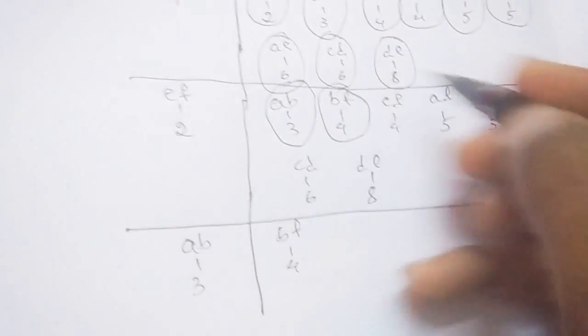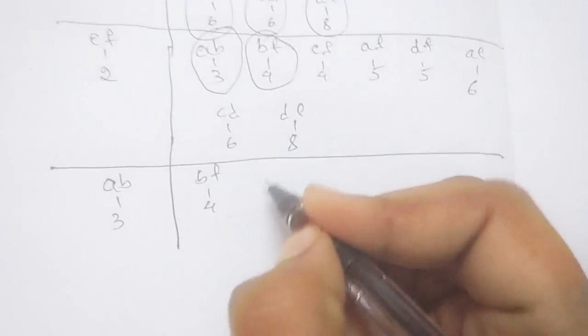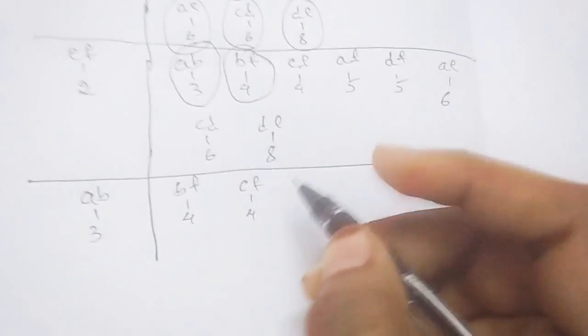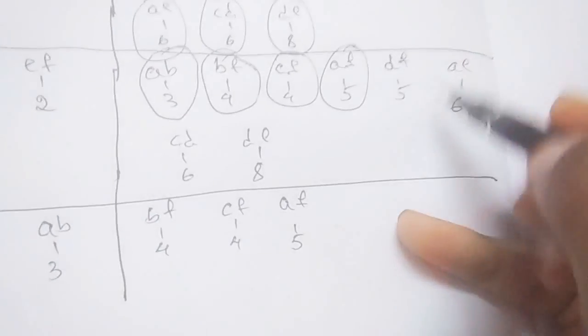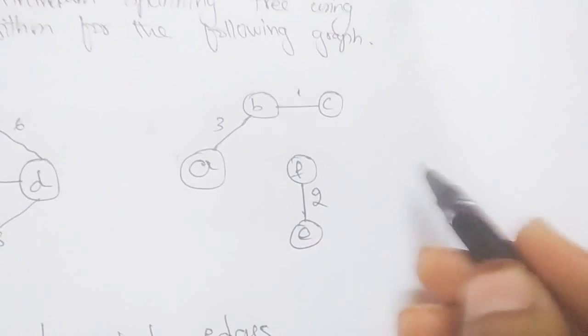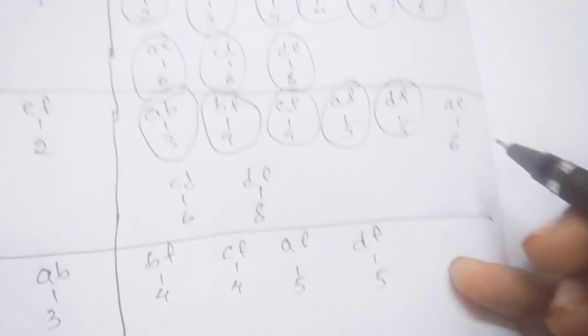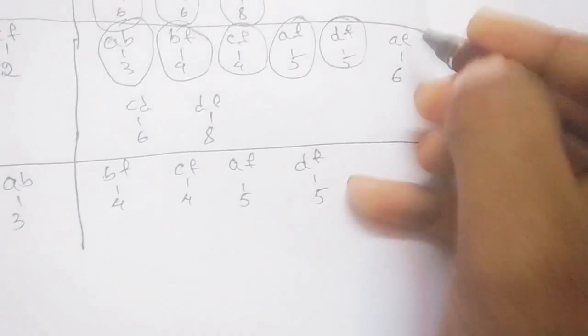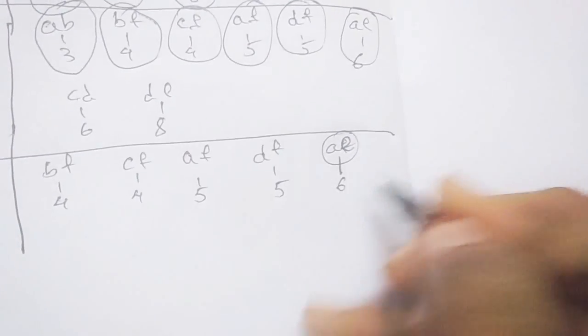CF does not form a cycle, so take CF with weight 4. AF does not form a cycle, so take AF with weight 5. DF does not form a cycle, so take DF with weight 5. AE does not form a cycle, so take AE with weight 6.